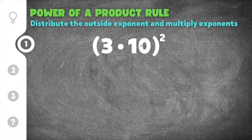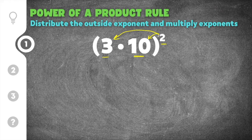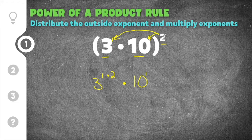This problem gives us the quantity 3 times 10, raised to the second power. Our bases in this problem are 3 and 10, and the exponent on the outside of the parentheses is 2. We have to take this exponent and distribute it to everything inside of the parentheses. We're going to distribute the 2 to the base of 3 and the 2 to the base of 10. In the case of these bases, their exponent is 1. So we're going to say 3 to the first power times our exponent of 2, times the other base of 10 to the first power times the exponent of 2.